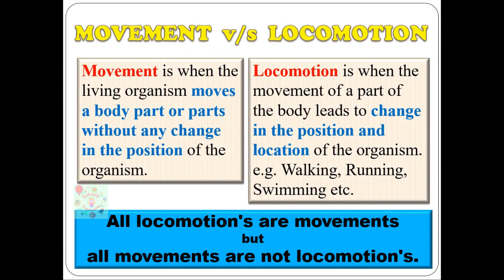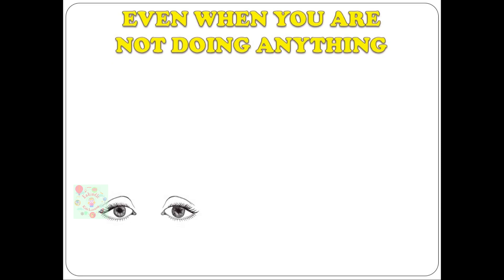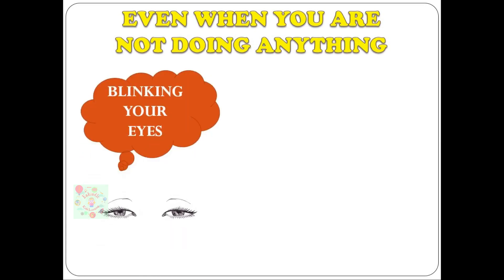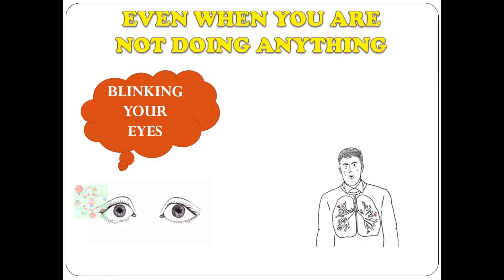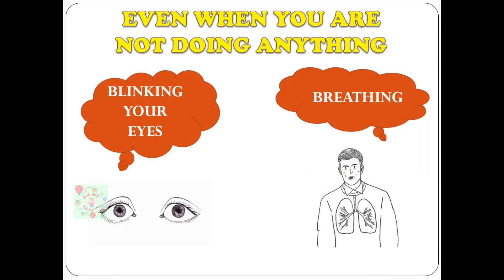You might have also observed that when you're not doing any activity, some body movements still happen automatically — like breathing and blinking of eyes. These are not done intentionally; they happen at regular intervals automatically in your body. We will understand these body movements in detail in this chapter.